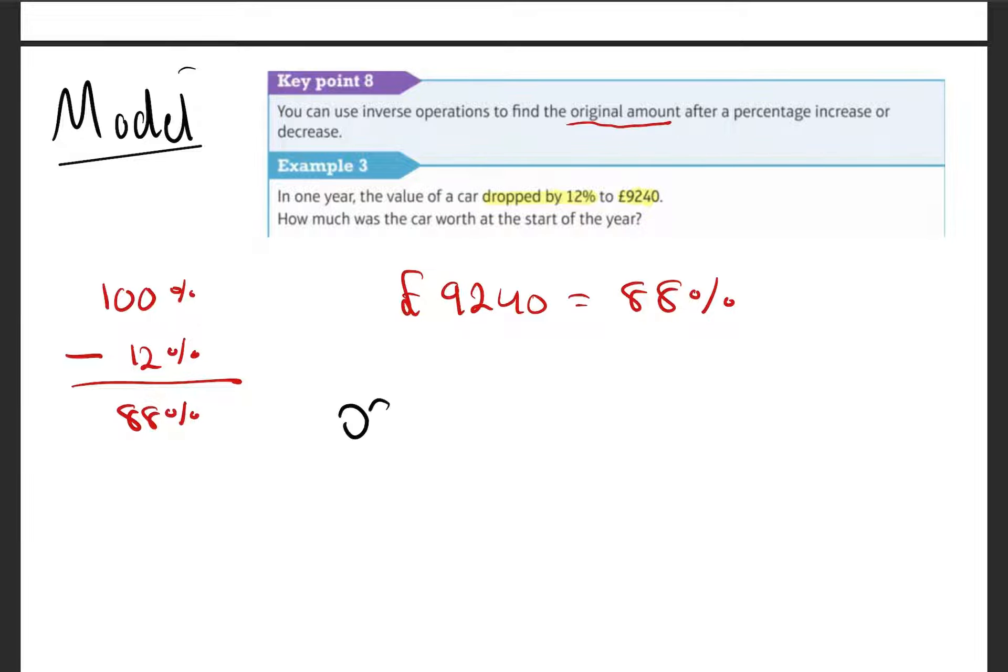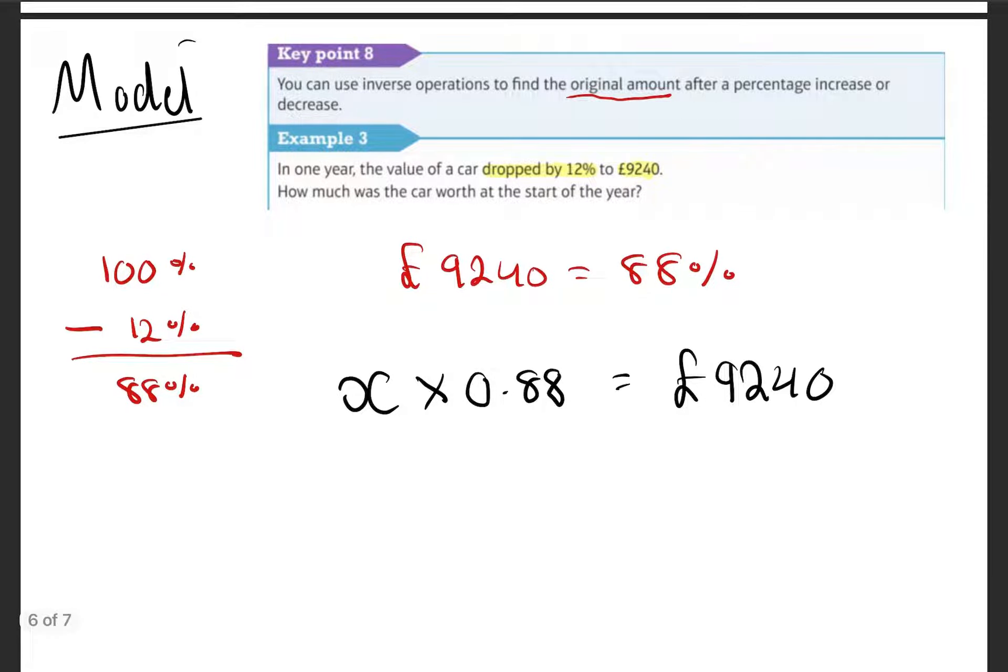So our original value, X, equals £9,240 divided by—this is the inverse—0.88. And that gives us an original value of X equals £10,500.